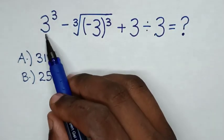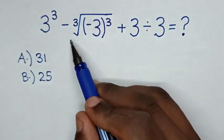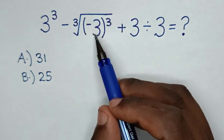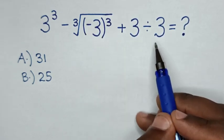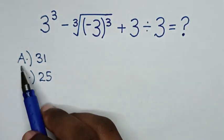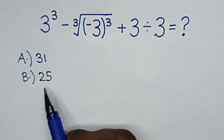Hello. How to solve 3 power 3 minus cube root of negative 3 bracket power 3 plus 3 divided by 3. Select between the answers A, 31, B, 25.